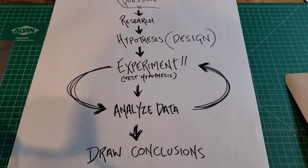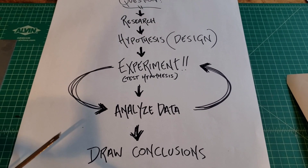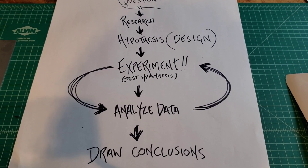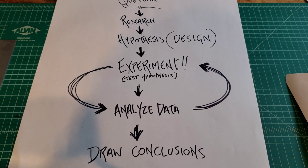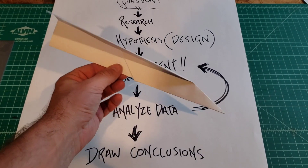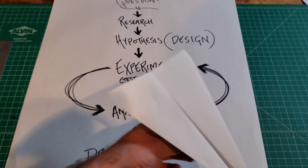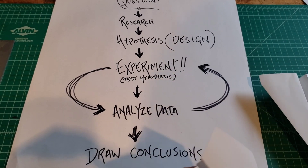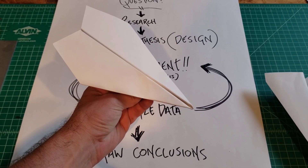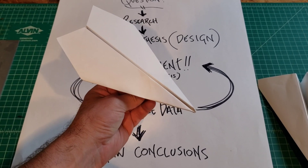The scientific method involves asking a question. In this case: how do I get my plane to fly very far? My research involved going on the internet and looking at different paper airplane designs. I went with the classic — it's worked in the past — but I also researched and found out how to make the world record holder for the longest distance of a paper airplane.